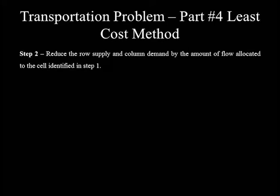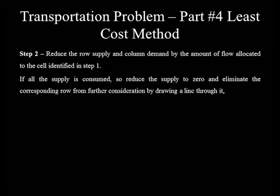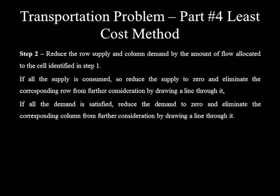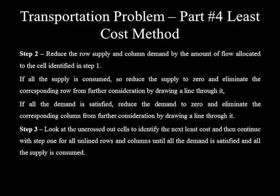Step 2: Reduce row supply and column demand by the amount of flow allocated to the selected cell. If all supply is consumed, reduce it to zero and eliminate the corresponding row by drawing a line through it. If all demand is satisfied, reduce it to zero and eliminate the corresponding column by drawing a line through it. Step 3: Look at the uncrossed-out cells to identify the next least cost cell, then continue with Step 1 for all unlined rows and columns until all demand is satisfied and all supply is consumed.